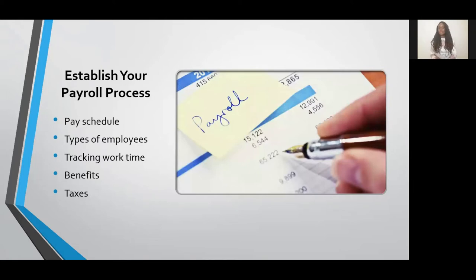The next step is to establish your payroll process. I recommend starting to think about the steps and stages you'll need to set up for running payroll on a regular basis. Some decisions that need to be made include your pay schedule — how often are you going to pay your employees? Weekly, bi-weekly, semi-monthly, or even monthly? The most common are weekly, bi-weekly, and semi-monthly. But you also need to consider the industry your business is in.